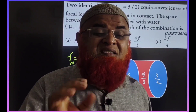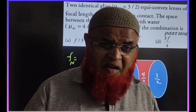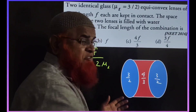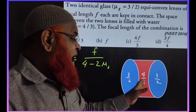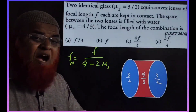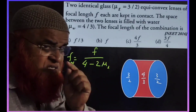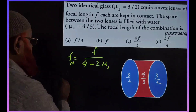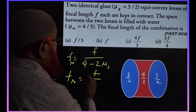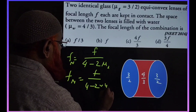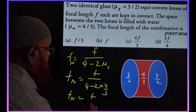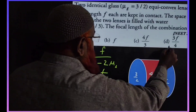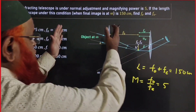For the first problem type — two convex glass lenses (μ = 3/2) with liquid (μ = 4/3) in between — the shortcut formula is: f_net = f / (4 − 2μ_L). Substituting μ_L = 4/3: f_net = f / (4 − 8/3) = f / (4/3) = 3f/4. This matches our earlier result.